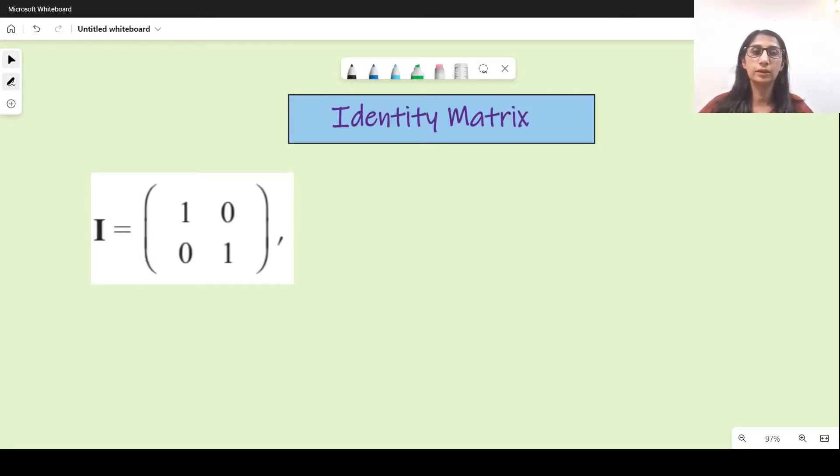Hello guys, welcome back. In this video we'll be discussing what is an identity matrix and we'll be doing a few questions related to it from the past papers. So what is an identity matrix? We see one in front of us. It is a matrix which has one and one in this diagonal and zero and zero in this diagonal.